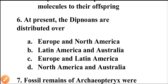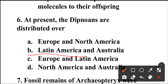Question number six: At present, dipnoans are distributed over which regions? Dipnoans are osteichthyans — organisms belonging to a subclass of bony fishes comprising the lungfish. They are distributed over Latin America and Australia. Option B is the correct answer.